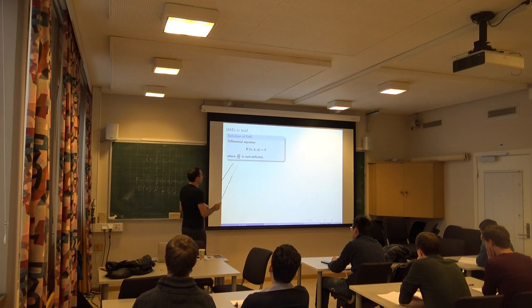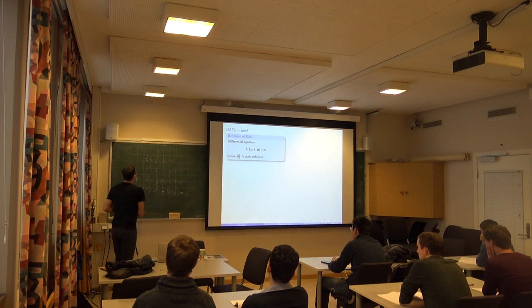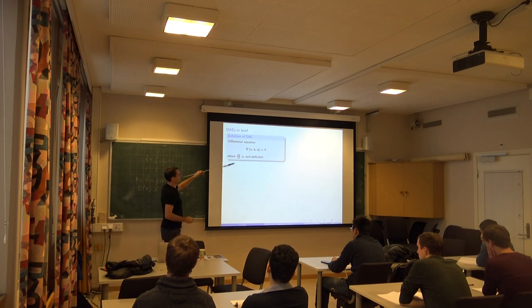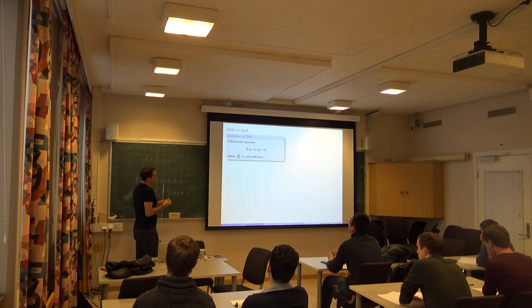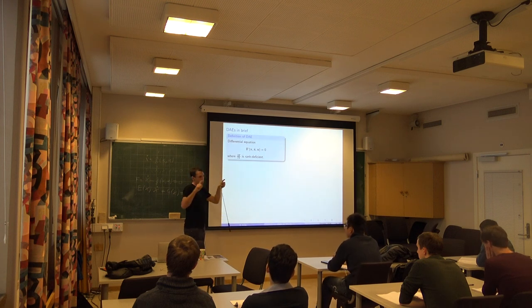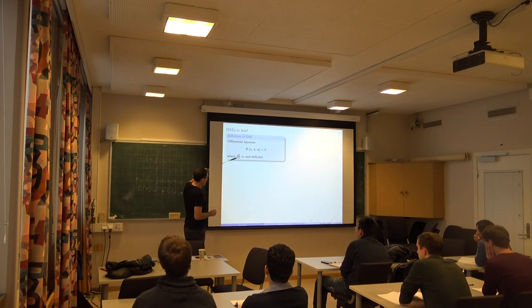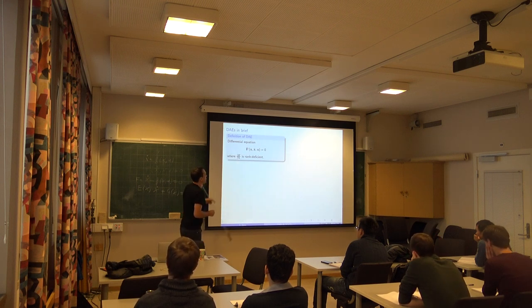The DAE condition—rank deficiency of del F / del X-dot—most commonly arises when some of your X variables don't appear as time-differentiated. In that case del F / del X-dot has columns of zeros, making it rank deficient by construction. You rename those variables Z in the equations, making a clear distinction between differential variables and algebraic variables. For a linear DAE you often write it as E(X) times X-dot plus something equals zero; if E of X is rank deficient, then inverting it is difficult, and you should treat the system in this implicit form.